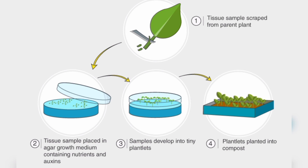Bio-fortification involves introducing new nutrients to a plant or crop to fortify it and increase its nutritional value. Plant conservation means preserving the DNA of a plant so you can clone it in the future using tissue culture. We have gene banks — also called germplasm banks — where seeds and leaves of particular plants are kept to maintain genetic diversity.